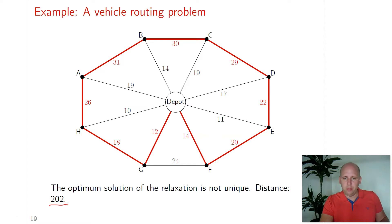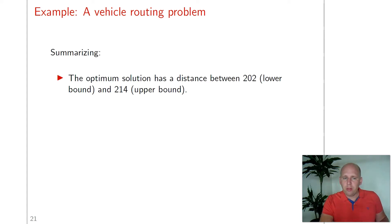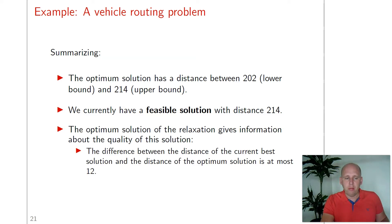We had the upper bound of 214 and a feasible solution with length 214. We now also know that the optimal solution of the original problem can never have a distance lower than 202, so this is a lower bound. That means the optimal solution lies between 202 and 214. We currently have a feasible solution with distance 214, so the gap between our current best solution and the optimal solution is at most 12. If that difference is acceptable, we can stop here; if not, we should try to further improve the current tour by finding a better heuristic or the optimal solution.